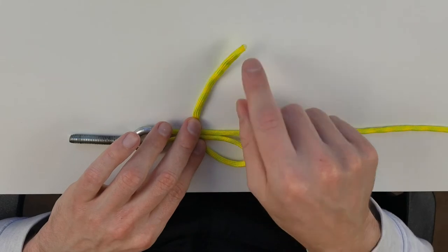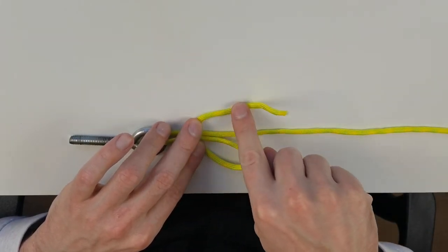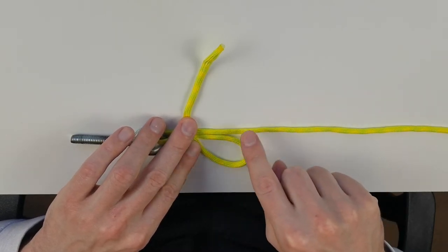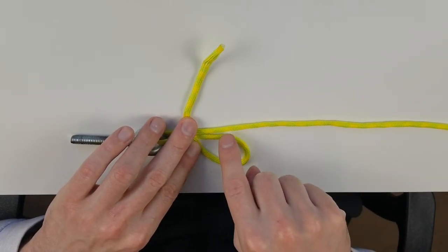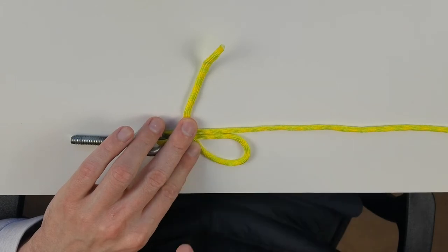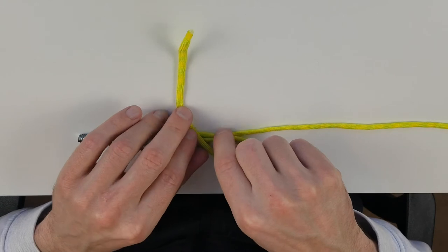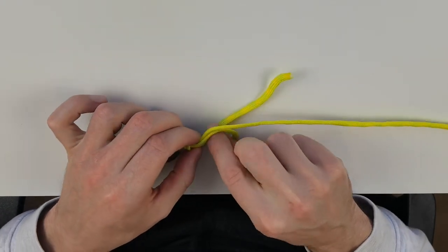All we have to do is take our tag end right here and wrap it six times around both this line and this line here. So we're going to go through the loop, we have to wrap it six times going up in this direction. So we are going to go one, two, three, four, five, six.